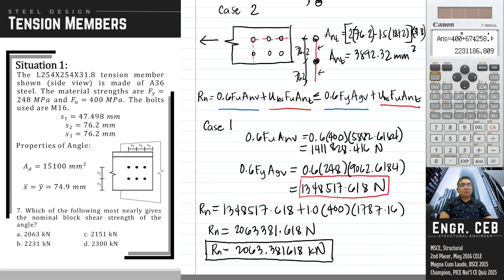Problem 7. Which of the following most nearly gives the nominal block shear strength of the angle? We have already figured it out. That is 2063.381618 kN. That is letter A.